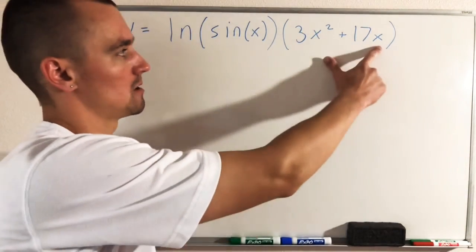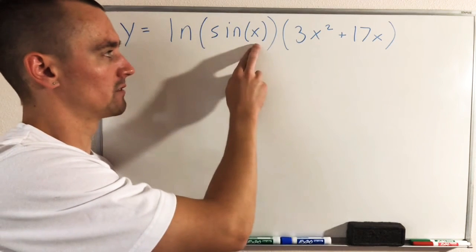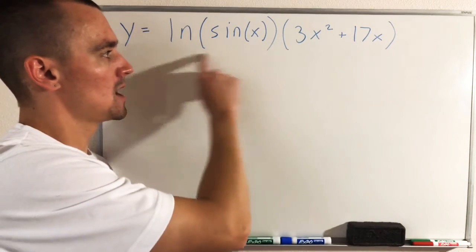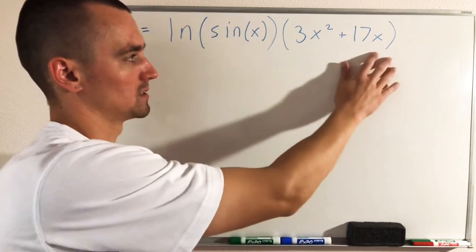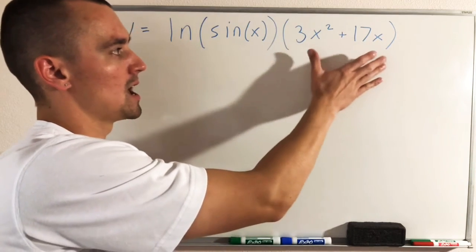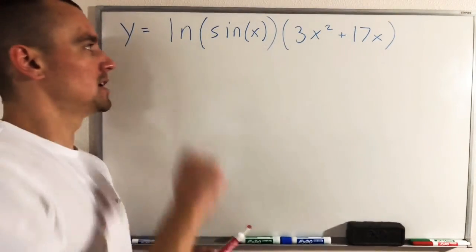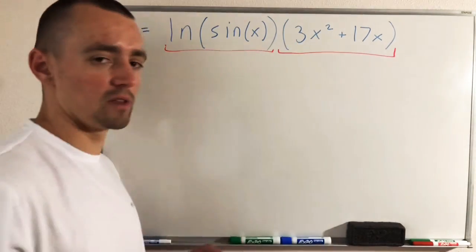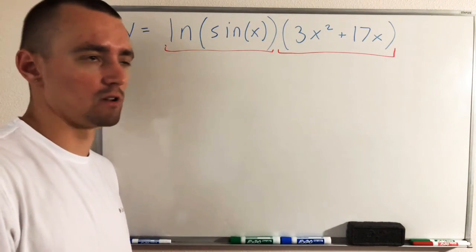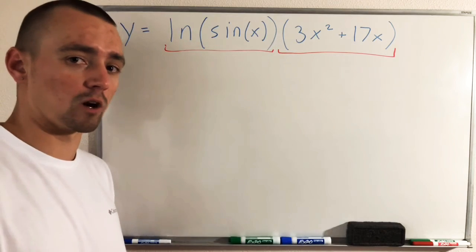If we think about order of operations — basically, if we were to plug in some value for x — what order would we apply these different functions to get the value of the whole expression? First we'd start inside parentheses, so we'd find sine of that x value, then take the natural log of that, giving us the left term. Then we'd evaluate 3x squared plus 17x and multiply the two pieces together. So the multiplication of the two pieces would be the very last thing we do, and we want to work backwards from that.